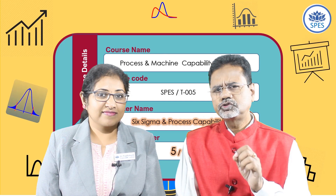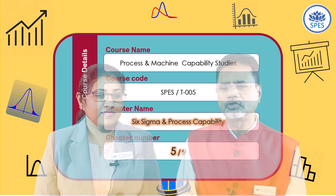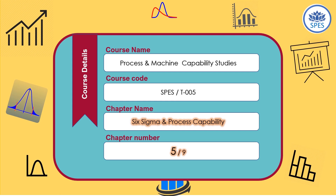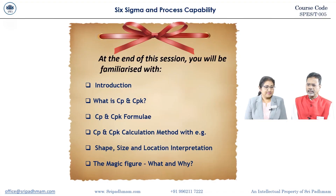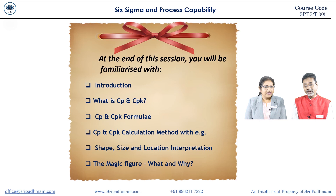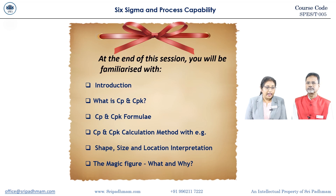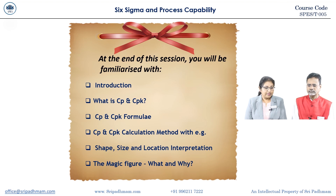Dear learners, most important part of our course. The chapter is six sigma and process capability. Six sigma and process capability study. Introduction: what is CP and CPK, CP and CPK formula. Shape, size, location — how to interpret. The magic figure: what and why.